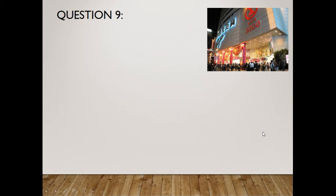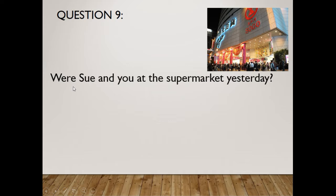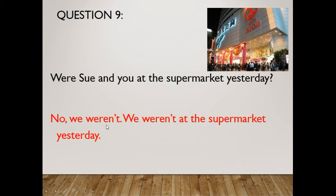Question nine: This is a department store. The question is, 'Were Sue and you at the supermarket yesterday?' The answer is: 'No, we weren't' — because it includes the person. 'We weren't at the supermarket yesterday.'